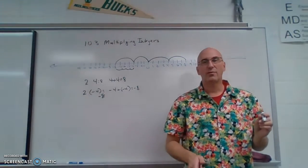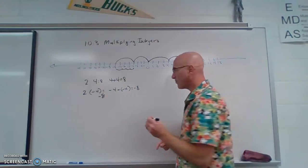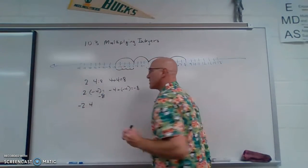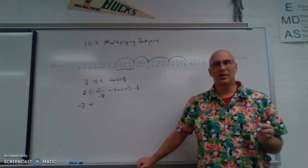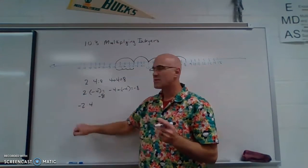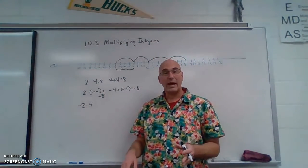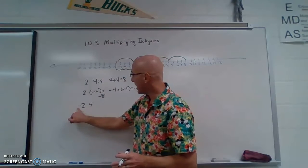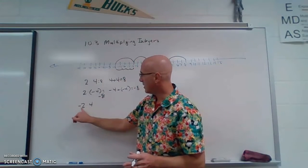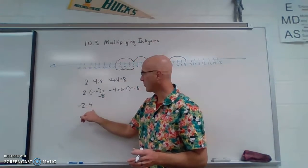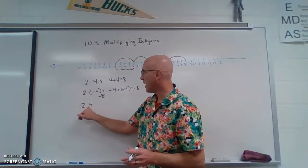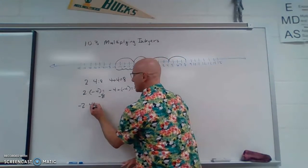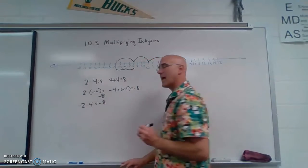What happens if the negative number comes first? What would happen if we had negative 2 times 4? Now this negative sign also can be read as the opposite of. So what this is saying is the opposite of 2 times 4. And we know that 2 times 4 is 8 and we want to take the opposite. So that is negative 8.